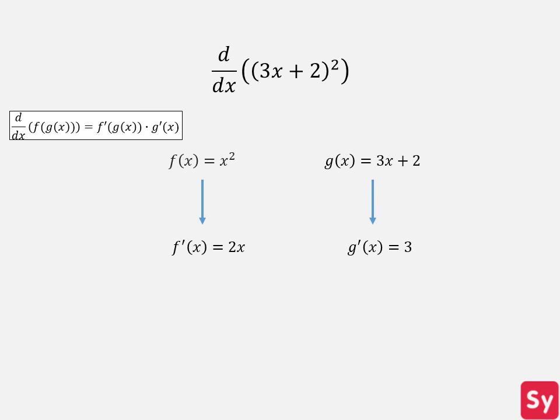Now we can start plugging in values into the chain rule. The derivative of this function is equal to f prime of 3x plus 2 times g prime of x. We can plug in the respective derivatives and get 2 times 3x plus 2 times 3. This simplifies to 18x plus 12.